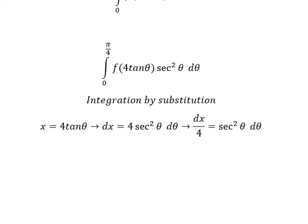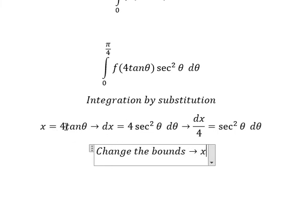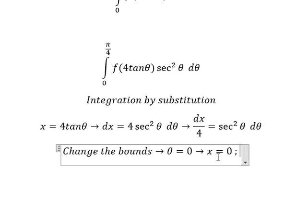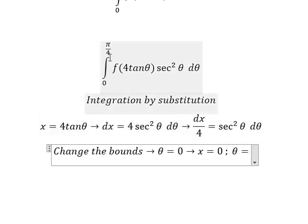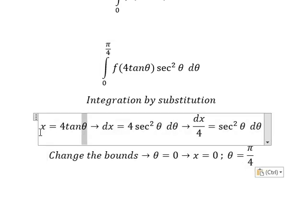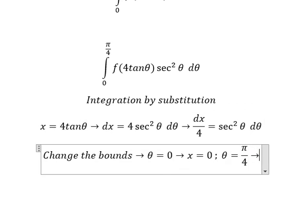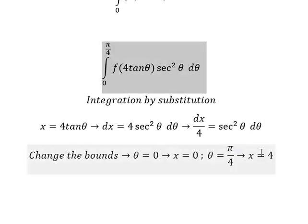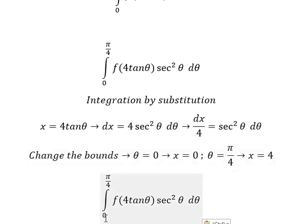Next we need to change the bounds. If θ equals 0, we put 0 in here, so you get x equals 0. If θ equals π/4, we put π/4 in here and we can find the value of x, that's 4. So 0 stays 0, and π/4 changes to 4.